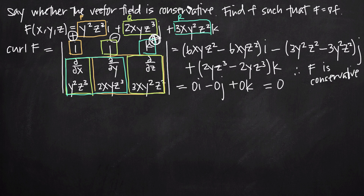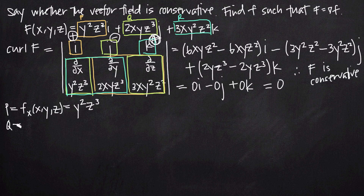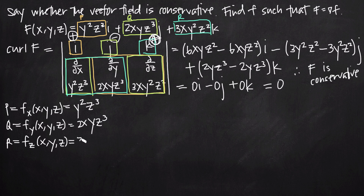Now that we know F is a conservative vector field, we need to find the function f such that F equals the gradient of f. To find f, we use the process: set P equal to the partial derivative of f with respect to x, so f_x(x,y,z) = y²z³. Set Q equal to f_y(x,y,z) = 2xyz³. And R equal to f_z(x,y,z) = 3xy²z².